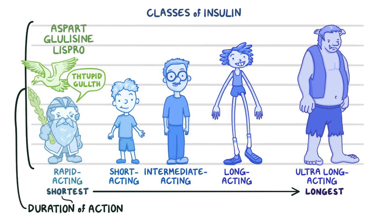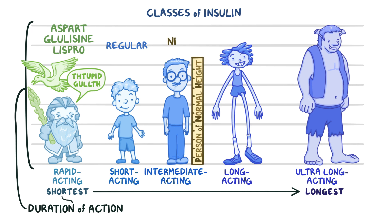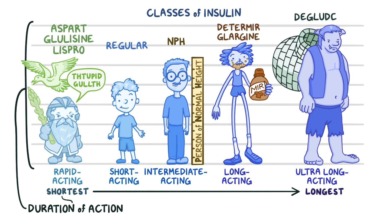Short-acting is pretty simple, since it's just a regular boy representing regular insulin. The man representing intermediate-acting insulin is a person of normal height, so NPH. The long-legged man is holding detergent for detemir; in fact he's gargling it for glargine, which can't be too healthy. The ogre is carrying his igloo on his back, which represents degludec.